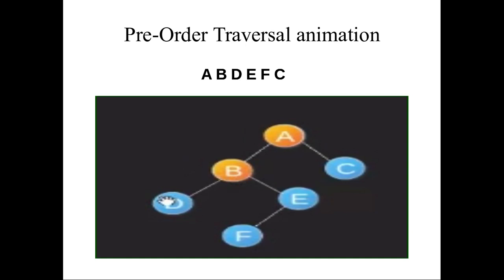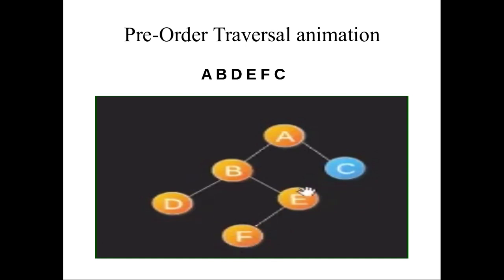Then we go for D, which is the leftmost child, so D will be visited. Once D and B are visited, we go for the right subtree of node B. D doesn't have any child. Coming to E, E is the root node which will be visited next. After visiting E, it has the left child F, so F will be visited. With this, the left side of root node A has been visited completely. Next, we go to node C, which is the right child of A and does not have any subtrees.